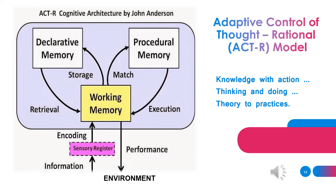Let's go back to the ACT-R model. The working memory is the active buffer between the sensory register, or the senses, and the long-term memory (LTM). In LTM, there are at least two forms of memory storage: declarative — what something is, facts — and procedural — how to do something. According to Anderson, procedural memory consists of sequences of action based on pattern matching, similar to computing instructions such as 'if-then': if this happens, then do that. The declarative memory, on the other hand, holds factual knowledge and any relevant associations and context. This shows the connection between knowledge and action, thinking and doing, theory to practice.